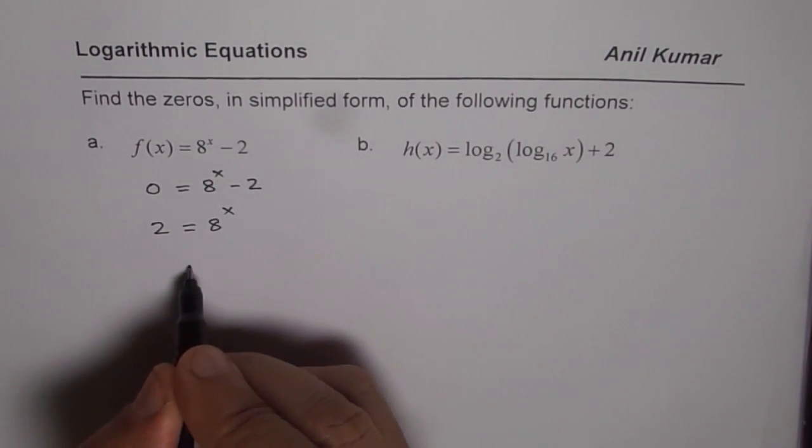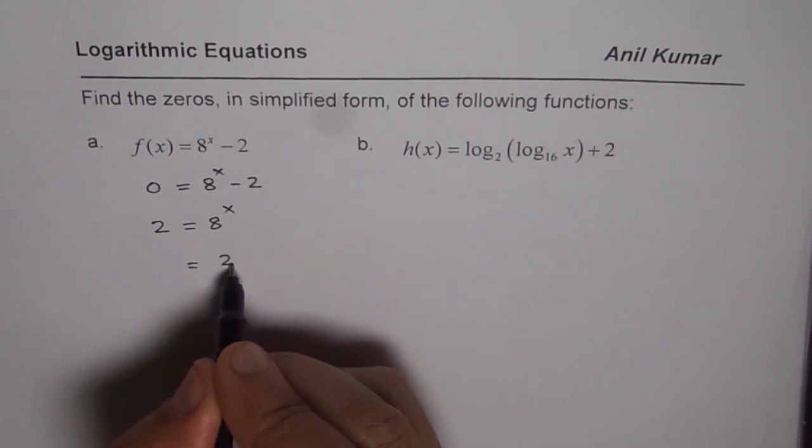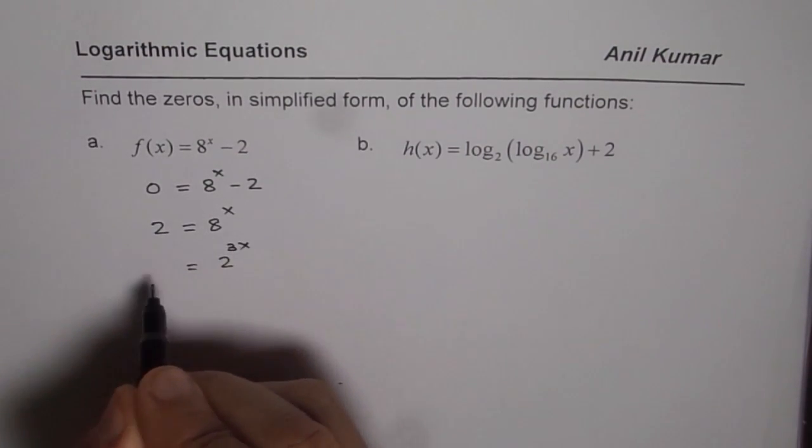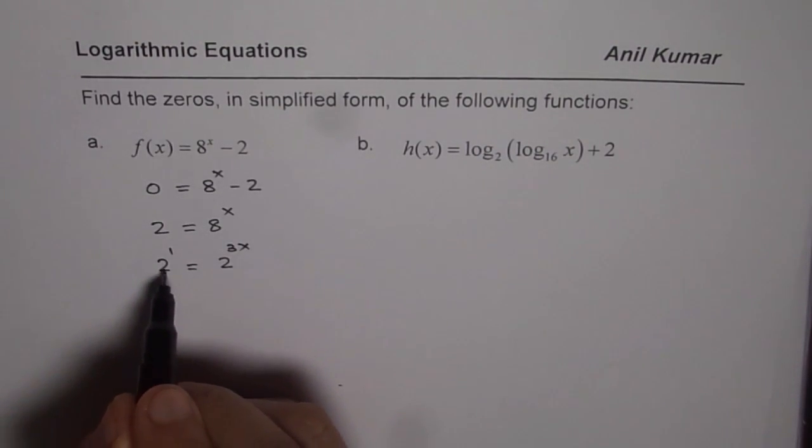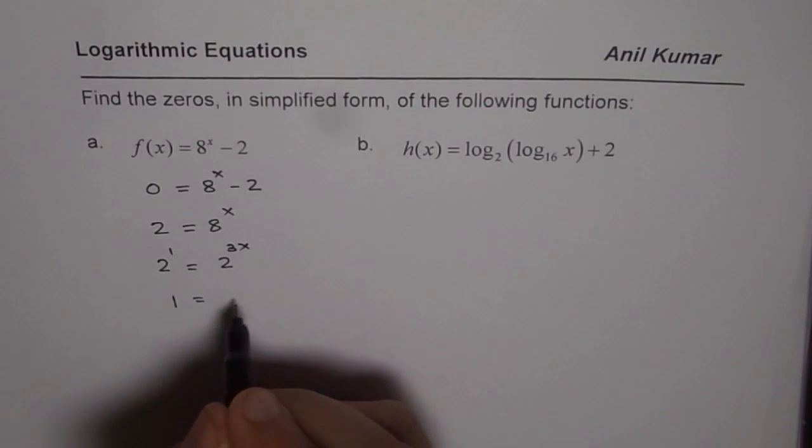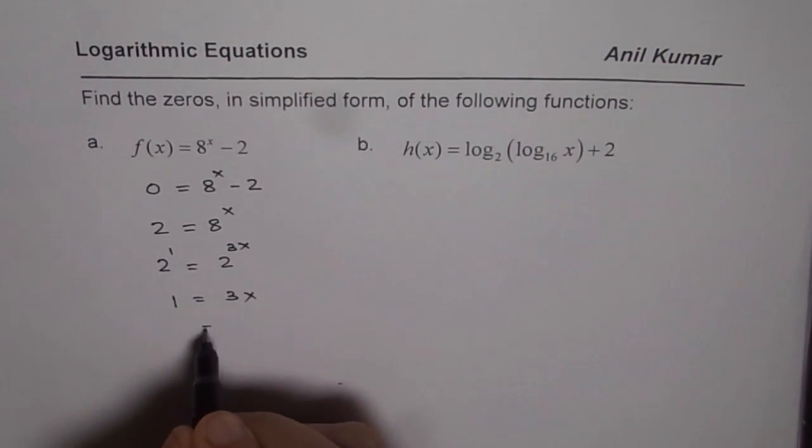8 can be written as a power of 2. So we can write this as 2 cubed. So we get 2 to the power of 3x. Now comparing the exponents, it is 2 to the power of 1. We get 1 equals 3x, or we get x equals 1 over 3.